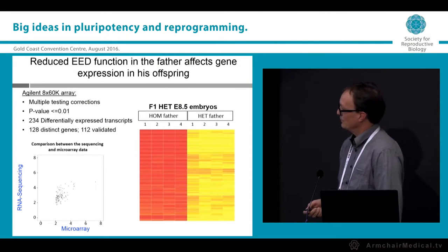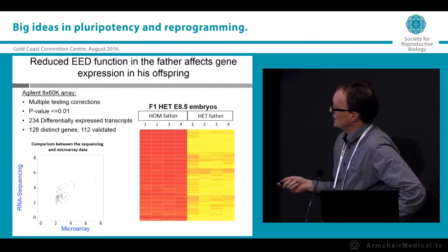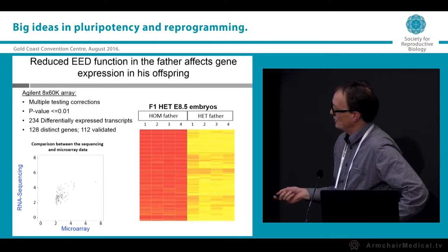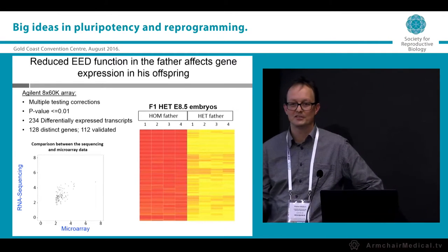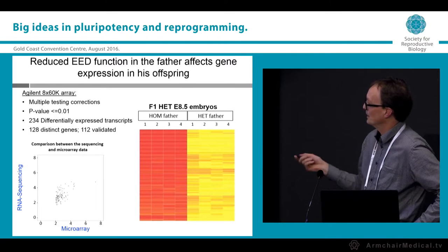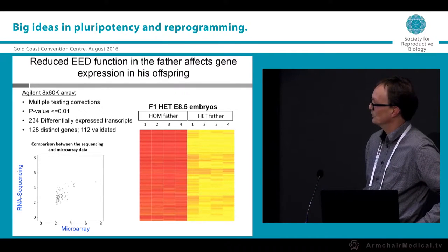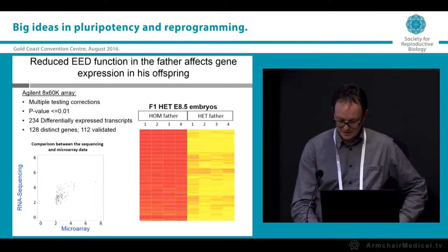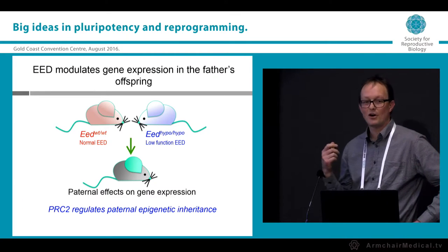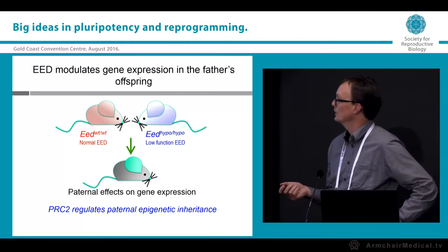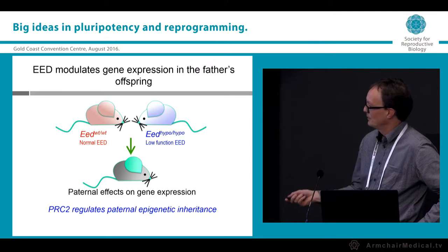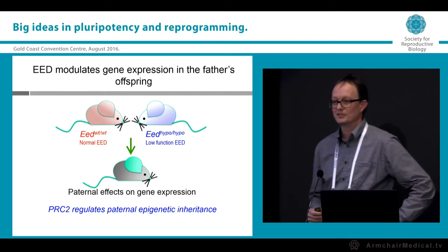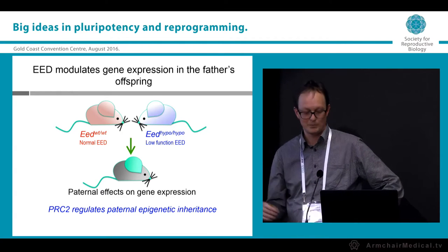We performed RNA-seq and microarray experiments on embryos produced from homozygous or heterozygous fathers and found transcriptional differences indicating that outcomes differ between these offspring. This demonstrates that Polycomb somehow regulates paternal epigenetic inheritance — there is at least an effect transmitted down the paternal side.